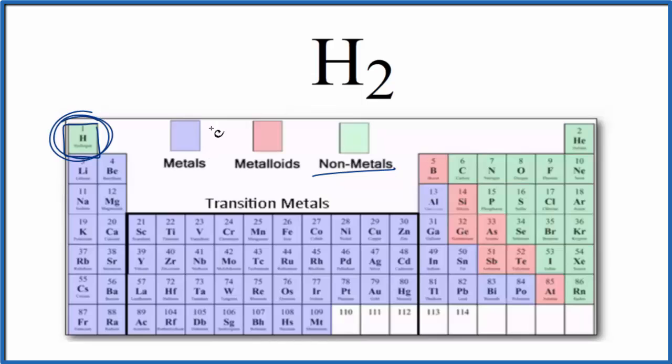So for hydrogen, when we have H2, two hydrogen atoms bonded together, hydrogen is a nonmetal, so we have two nonmetals bonded together. That's covalent, or also called a molecular compound.